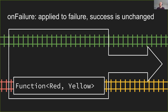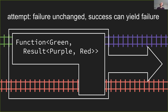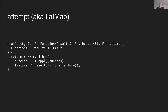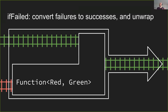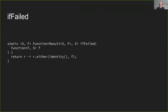'onFailure' is the complement of onSuccess - it transforms a failure value whilst leaving successes unmodified. 'attempt' is where failures are unchanged but successes can also yield failures - you're provided a function that can either result in a success or a failure. We don't need to wrap back into success because the function already gives us a result. 'ifFailed' - if we get a failure, what we get out is not a result anymore, it's just our success type. If we've got a success we return it; if it's a failure we return the function that transforms our failure back into our success type.